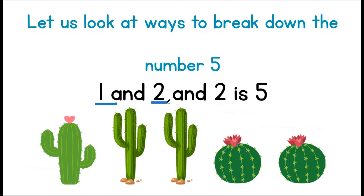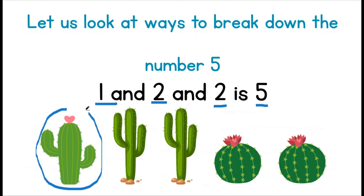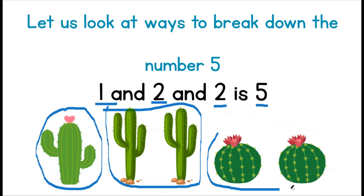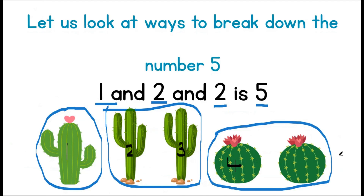One and two and two is five. We have three different types of cacti: one, two, and three. Let us see how many they make together: one, two, three, four, and five. This means that one and two and two again gives us five.